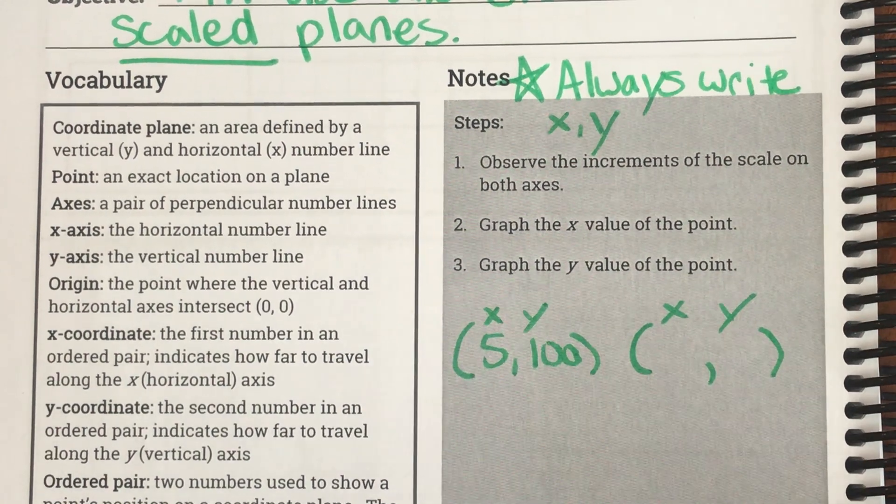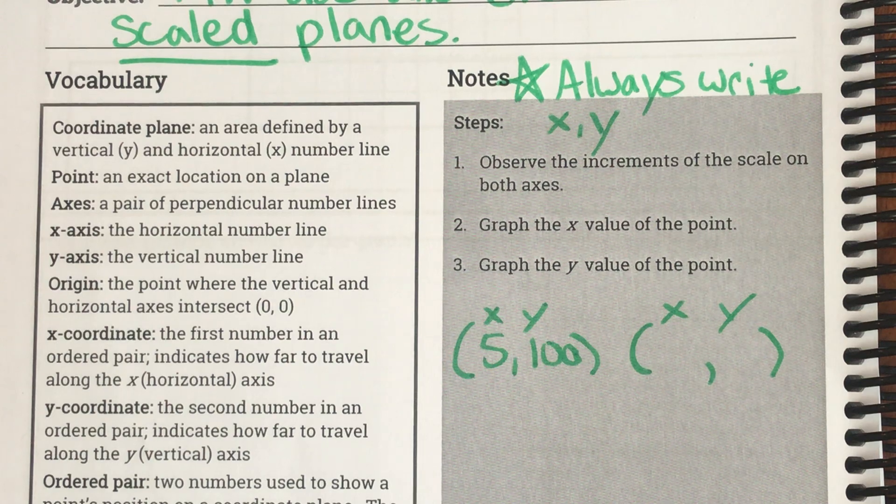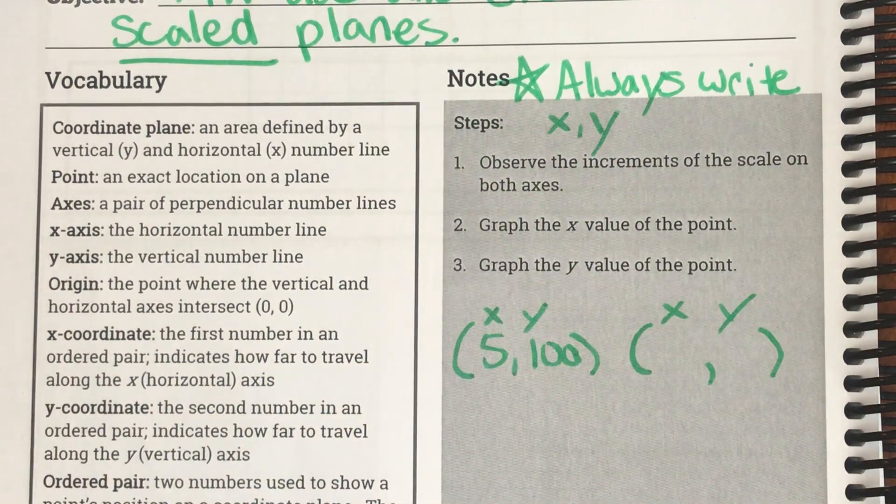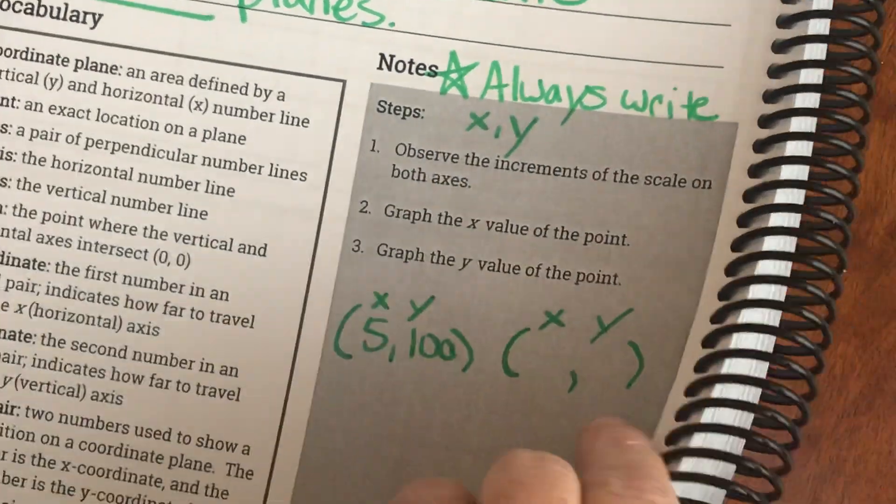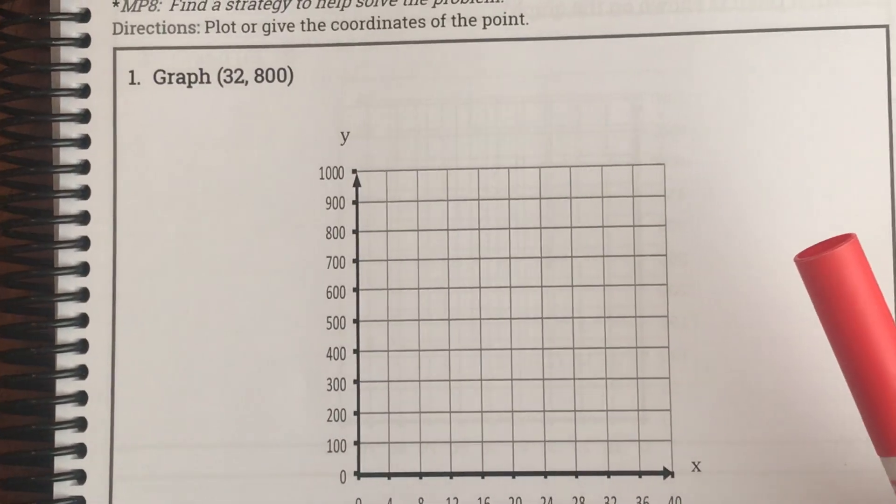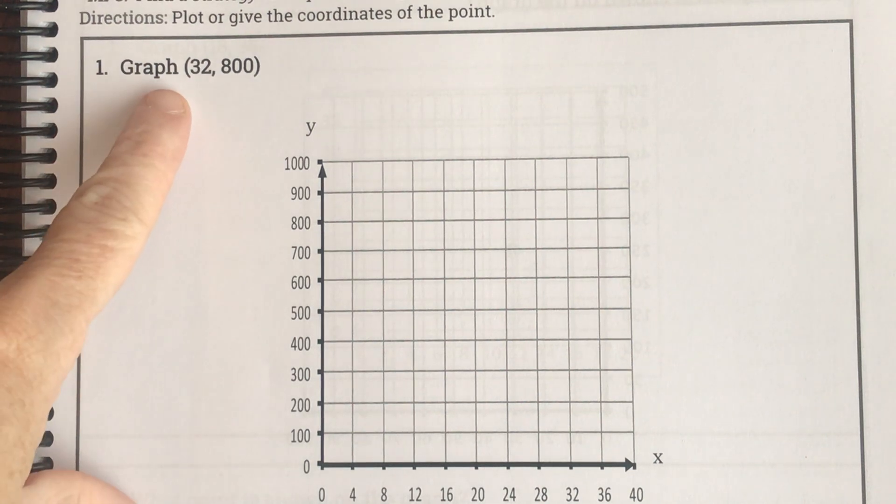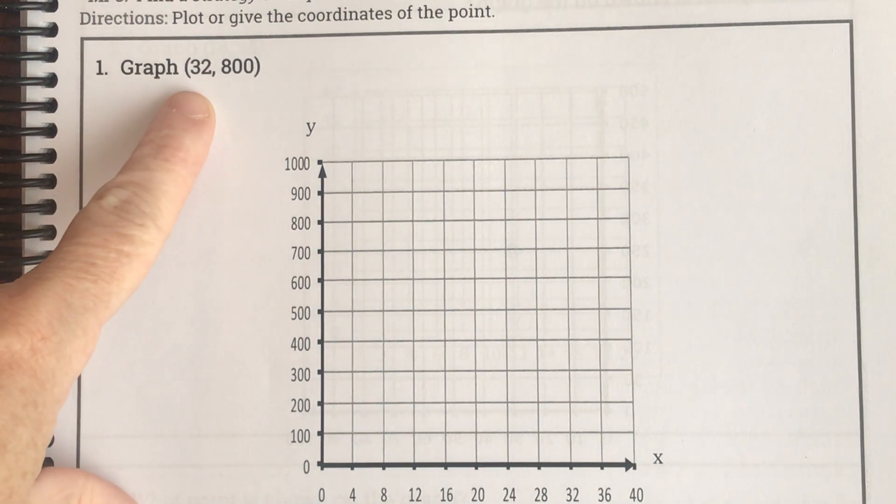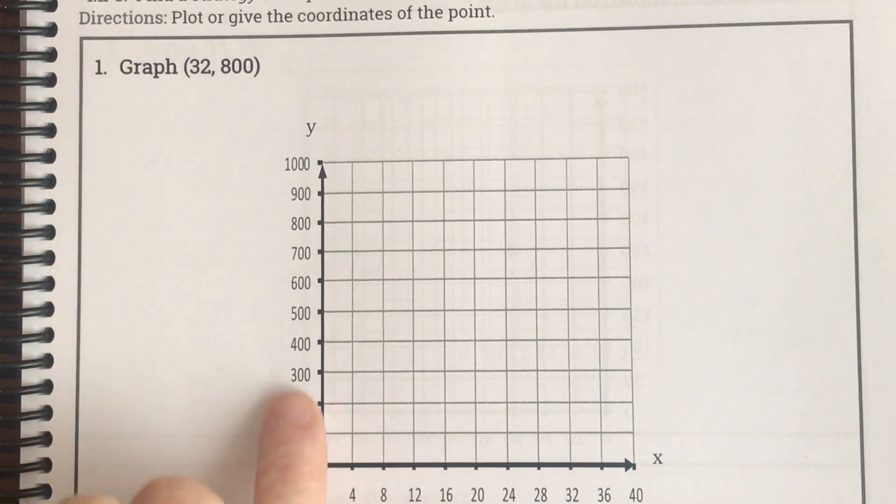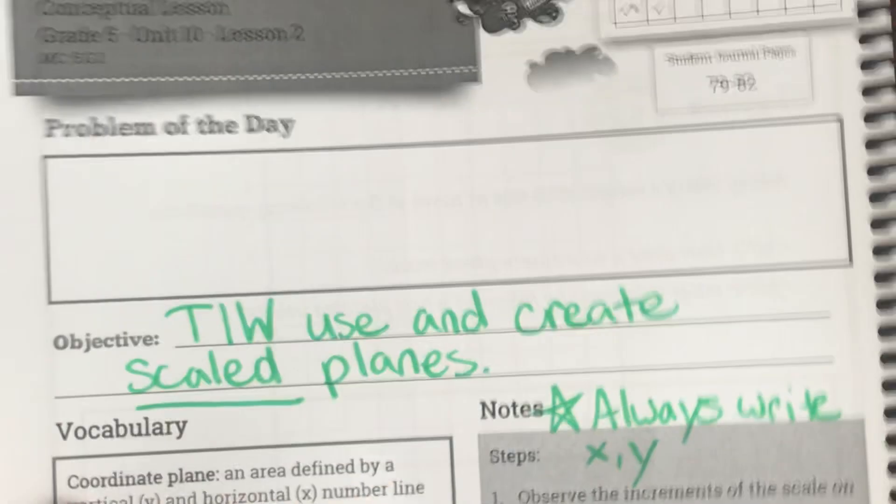Today our big thing is going to be scaled is going to be our difference. Here is my first problem. It says graph 32, 800. This is where the scaled part comes in. Now, if I really had to graph 32, 800 on a regular coordinate plane, that wouldn't fit.